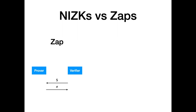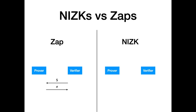The goal of a NIZK is similar to that of an argument system like a zap, but now we want to remove the interaction completely — the protocol consists of a single message from the prover to the verifier. We also want a stronger notion of privacy called zero-knowledge. These two requirements in tandem are impossible in the plain model, so we work in the CRS model, which assumes a trusted party that provides a uniform random string — the common random string, or CRS — to all parties.